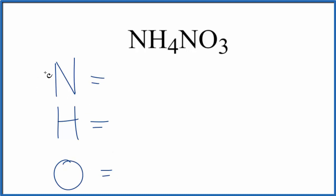So we have three different elements. For the nitrogen, it's not written. We assume there to be a one here and over here on this nitrogen as well. So we have two total nitrogens. Hydrogen we have four, and oxygen we have three. So we have a total of nine atoms in NH4NO3.